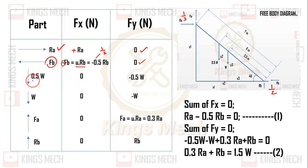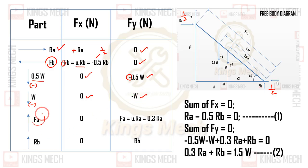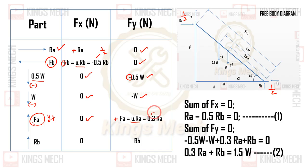In the y-direction, the sum is zero. The 0.5W acts downward on the y-axis, so it is negative. W acts downward on the y-axis, also negative. Fa (friction at floor) acts upward, so y-axis positive. The friction force Fa equals μ times Ra, which is 1/3 times Ra. Rb acts upward at the wall, so y-direction is positive.